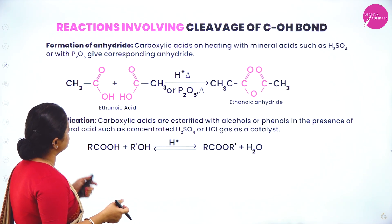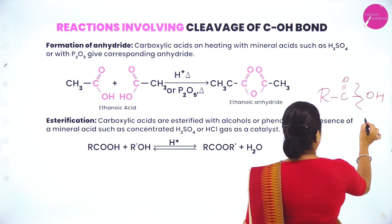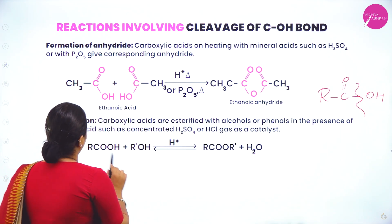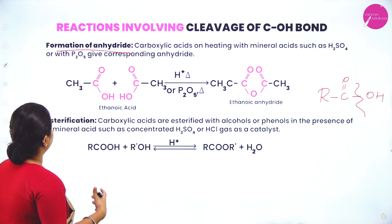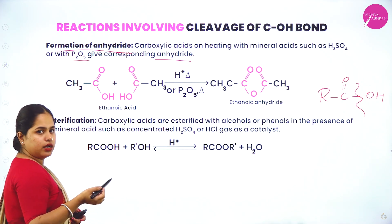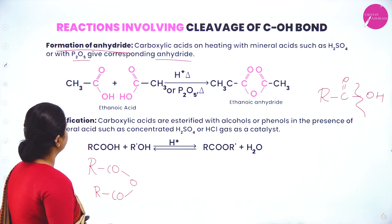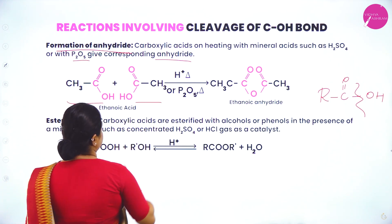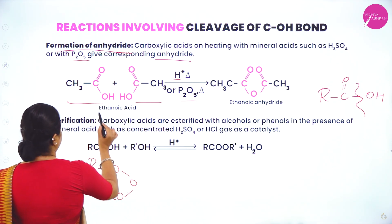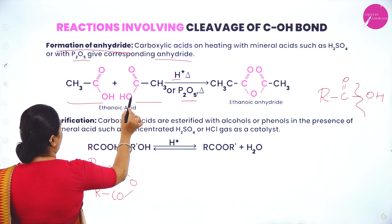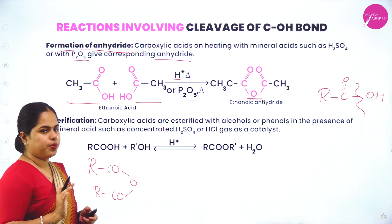Moving on to reactions involving cleavage of the carbon-oxygen bond. The formation of anhydride: carboxylic acids on heating with mineral acids such as H₂SO₄ and H₃PO₄, or with P₂O₅, give the corresponding anhydride. For example, two molecules of acetic acid heated in the presence of mineral acid or P₂O₅ combine — the CH₃CO groups join through an oxygen bridge and water is removed — to form acetic anhydride.